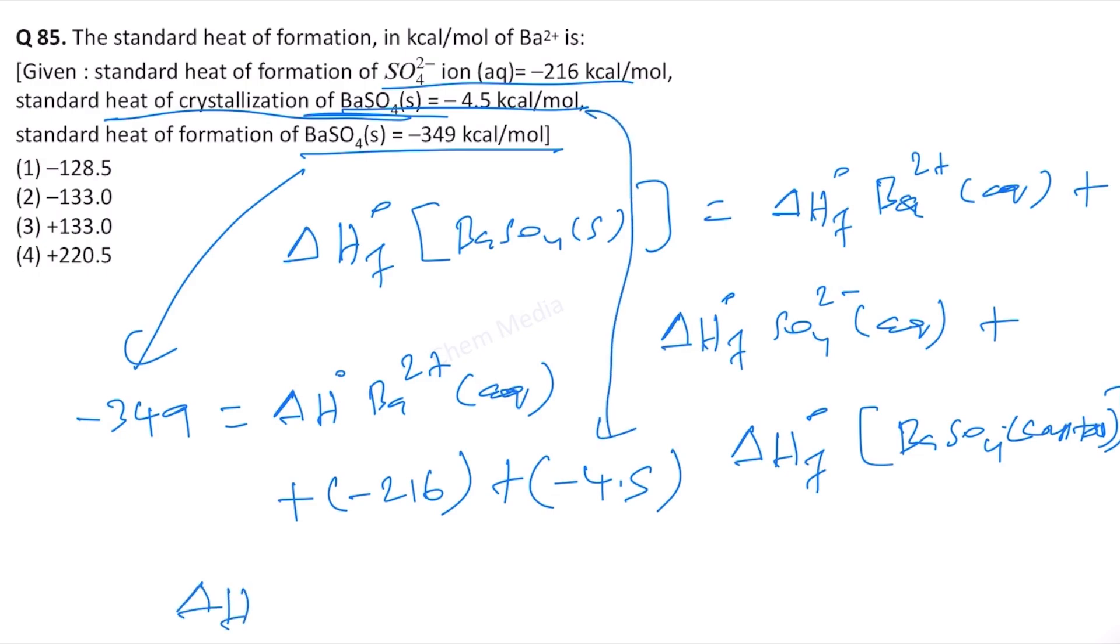So this means delta H heat of formation for barium 2 plus in the aqueous medium will be minus 349 plus—because we are sending the value on the other side—220.5. So this would give us minus 128.5. This means option one is correct.